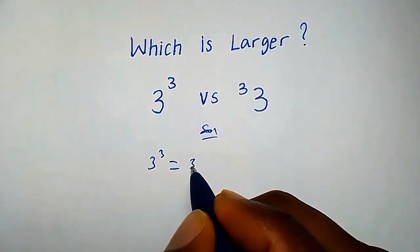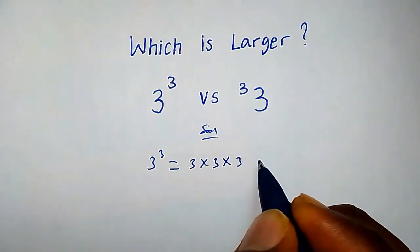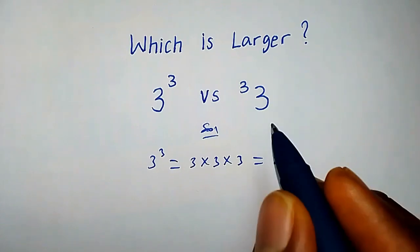3 to the power of 3 can be written as 3 times 3 times 3, and this gives 27.